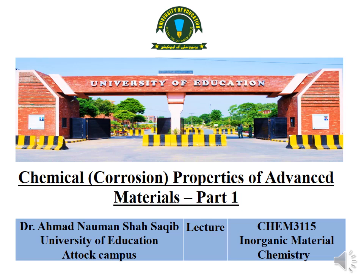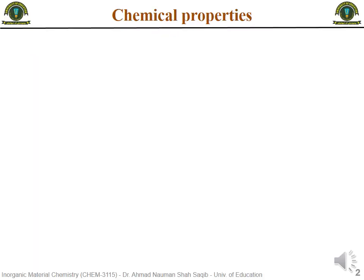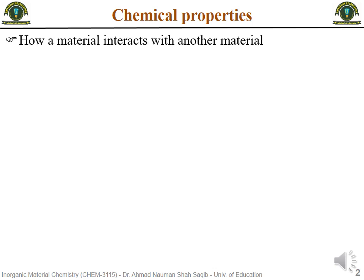Today in this lecture we will first briefly see what are the chemical properties, and then we will discuss about corrosion: what is corrosion, how it happens, and what are the disadvantages of corrosion. Before we start, you know that we already discussed in detail about advanced materials when we studied magnetic properties, so we don't need to define advanced materials again.